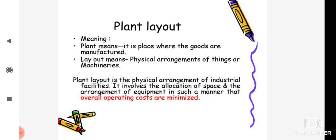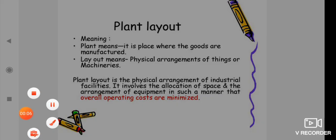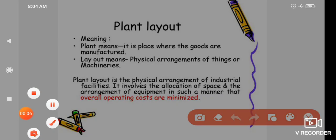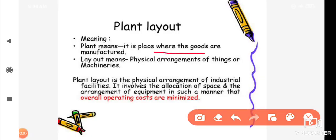Hi students, we are going to discuss plant layout in class. First of all, plant means it is the place where goods are manufactured. Layout means the physical arrangement of things and machinery.